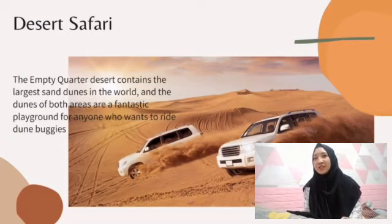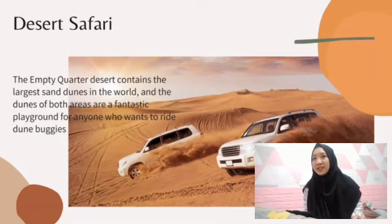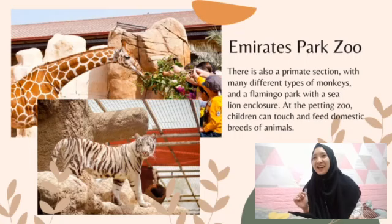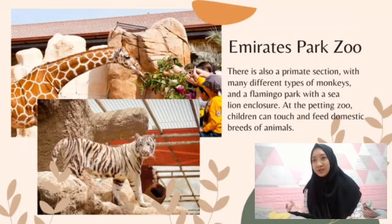Number 12 is Desert Safari. The Empty Quarter is considered the largest sand dune in the world. The dune belt areas are a fantastic playground for anyone who wants to ride down the dunes, try sandboarding, go camel trekking, etc. It's very wonderful, I think.